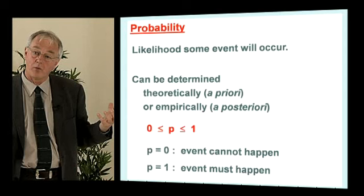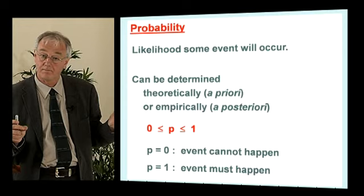Probability is the cornerstone of everything in statistics. Probability is just the likelihood that an event will occur. If the event can't occur, the probability is 0. If the event must happen, the probability is 1. All real probabilities lie between 0 and 1. In MCQ questions, they will sometimes try to confuse you between a probability and a correlation coefficient. Probabilities can only run from 0 to 1 — they cannot be negative. Correlations also run from 0 to 1 but can also be negative, down to minus 1.